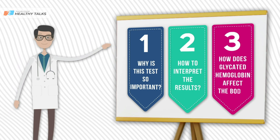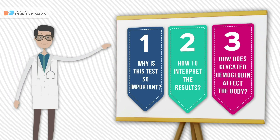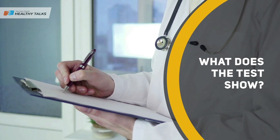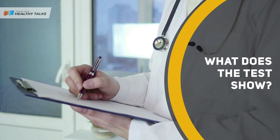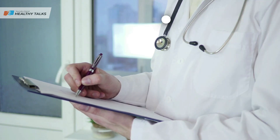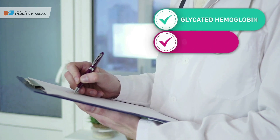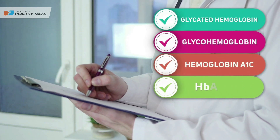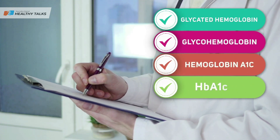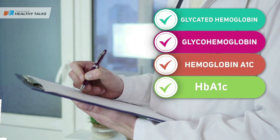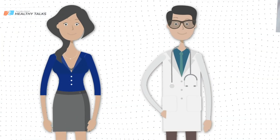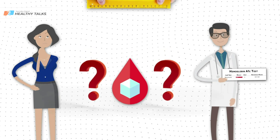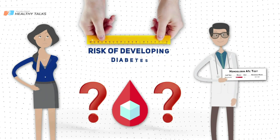We will tell you why this analysis is so important, how to decipher the results, and how glycated hemoglobin affects the body. It is also referred to in medical documents as glycosylated hemoglobin, glycohemoglobin, hemoglobin A1, or more briefly HbA1. The results of the test can determine if you have diabetes and accurately assess the risks of developing it in the future.